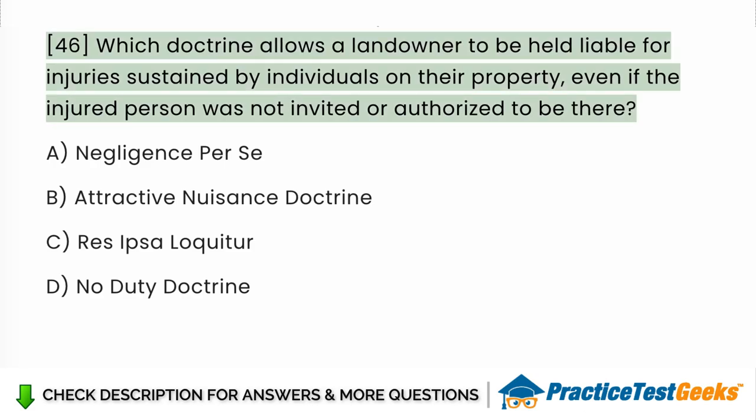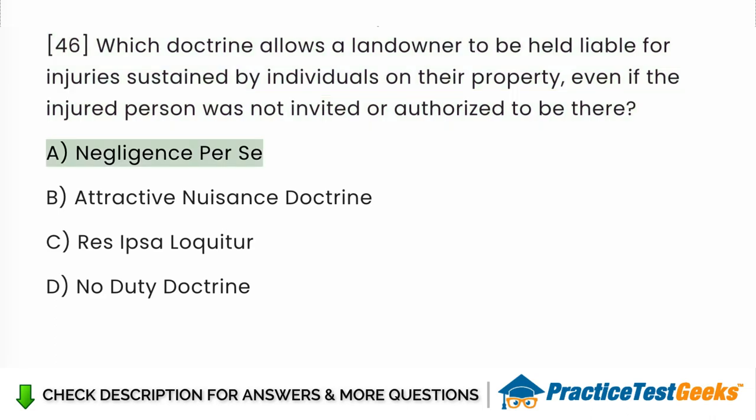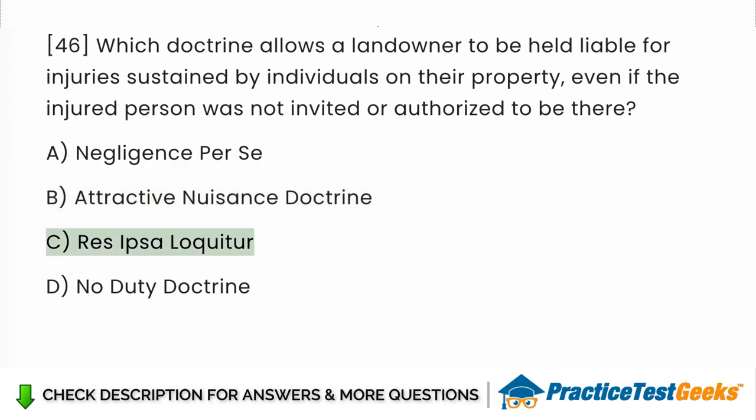Which doctrine allows a landowner to be held liable for injuries sustained by individuals on their property, even if the injured person was not invited or authorized to be there? a. Negligence per se. b. Attractive nuisance doctrine. c. Res ipsa loquitur. d. No-Duty Doctrine.